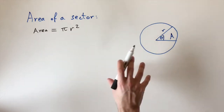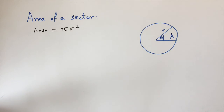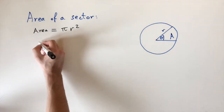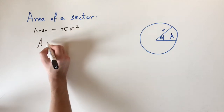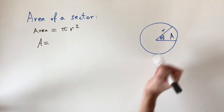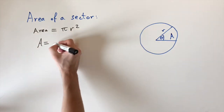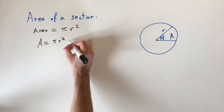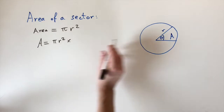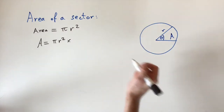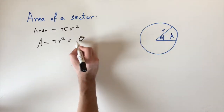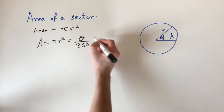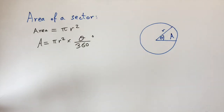We're going to do this in both radians and degrees to see which is nicer. Starting with degrees: the area equals pi times r squared, multiplied by the ratio of the angle to a full revolution, which in degrees is 360. So the formula in degrees is: Area = (theta / 360) × pi r squared.